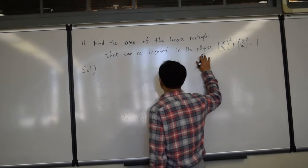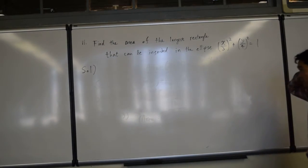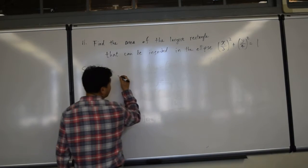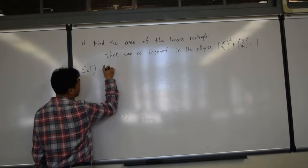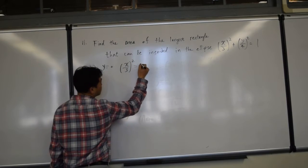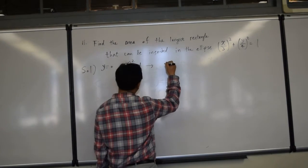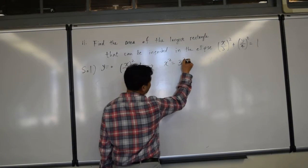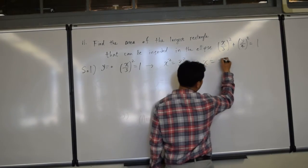Alright, so find the area of the largest rectangle that can be inscribed in this ellipse. If you set y equal to 0, then you get x over 3 squared equal to 1, which gives you x squared equals 3 squared, which gives you x equals plus or minus 3.